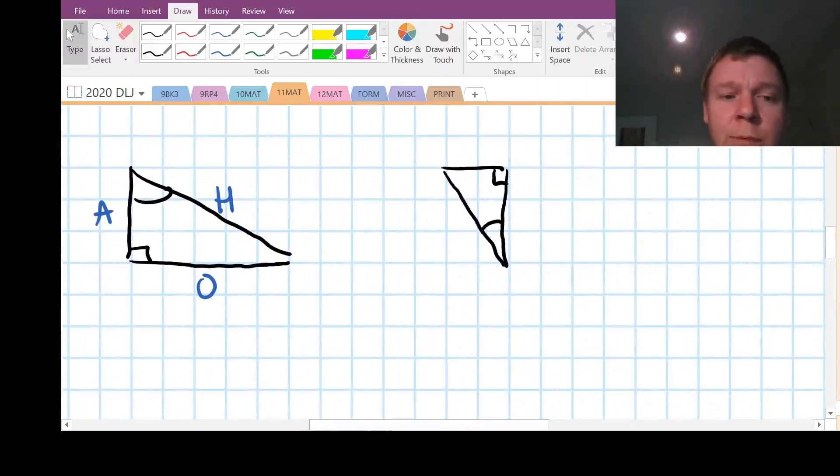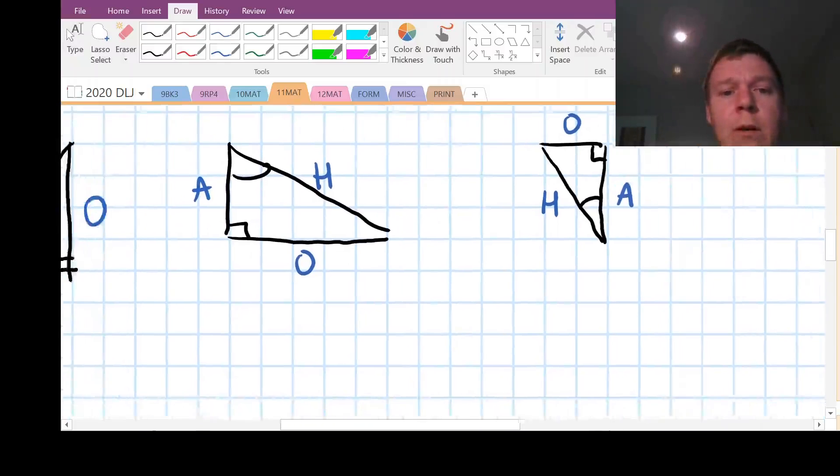Last one. And then we've probably got the gist of it. So H for the long side, the hypotenuse. A for the attached angle, the attached side. And O for the opposite side.